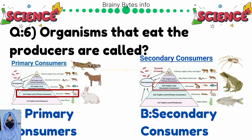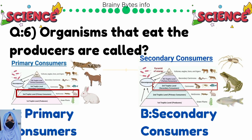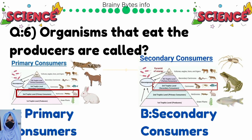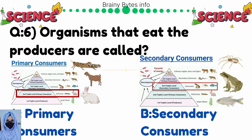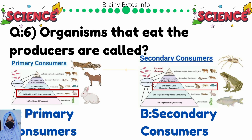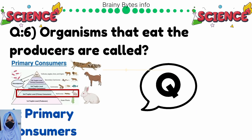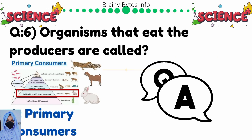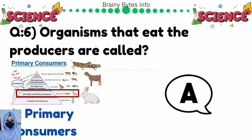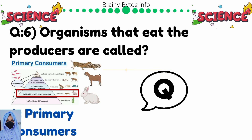Organisms that eat producers are called — option A: primary consumers, option B: secondary consumers. Correct answer is primary consumers.